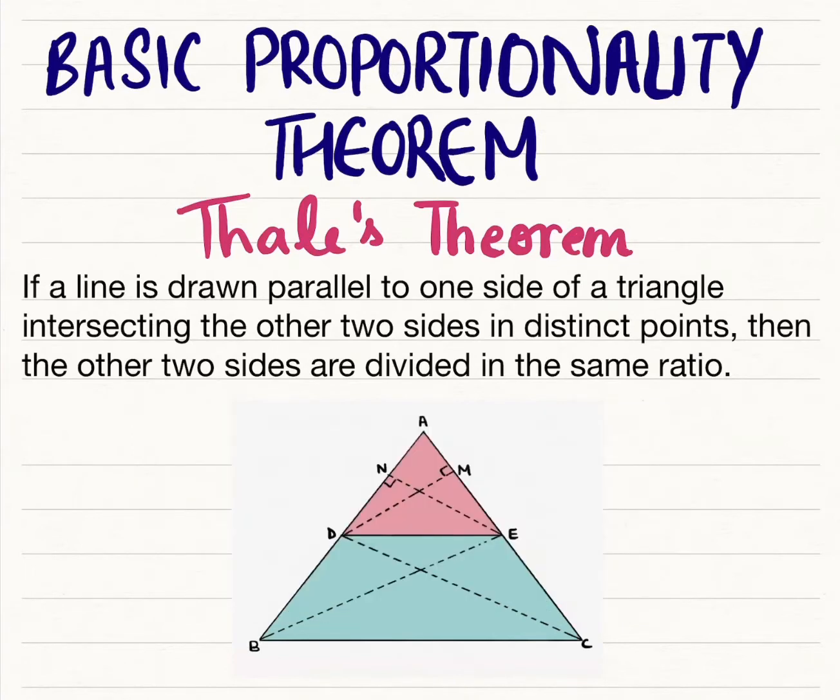So today, as you can see, I'm going to prove the basic proportionality theorem, or the Thales theorem, which states that if a line is drawn parallel to one side of a triangle, intersecting the other two sides in distinct points, then the other two sides are divided in the same ratio.